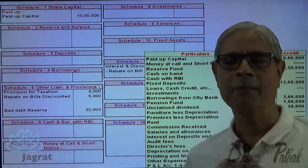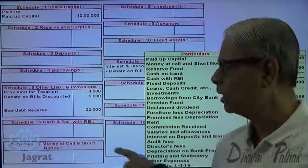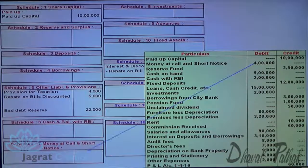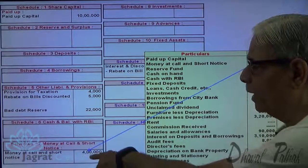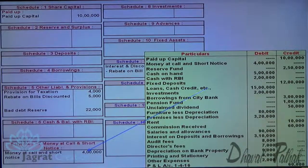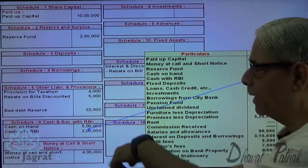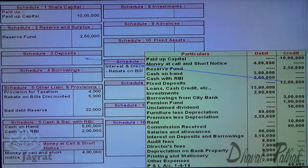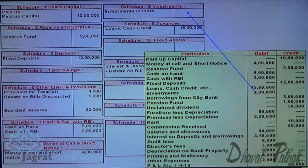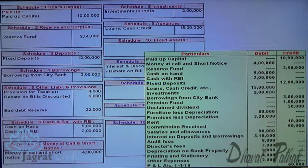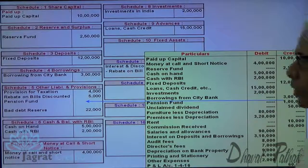Such advances will appear in schedule 7 — money at call and short notice and balance with other banks. Then comes reserve fund, which will go to reserves. Cash on hand and balance with Reserve Bank of India will appear in schedule 6. Cash with RBI goes in the same schedule 6. Fixed deposit as a liability goes to deposits — schedule 3, liabilities. Loan, cash credit and advances go to advances. Investment goes to schedule 8, investments. Borrowings from City Bank go to schedule 4, borrowings. Pension fund — also a liability — goes to schedule 5, other liabilities.